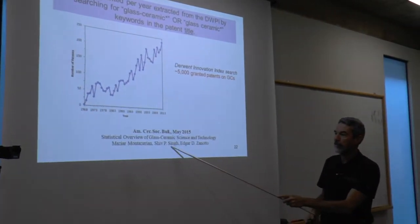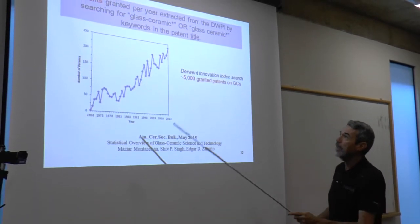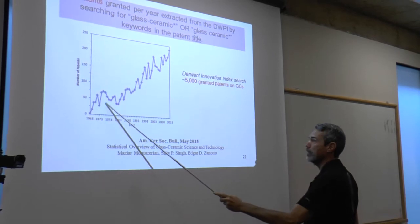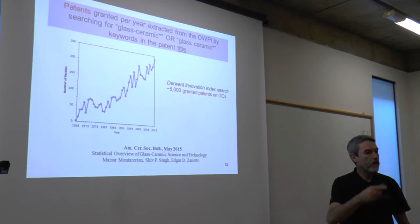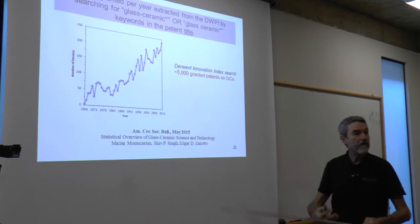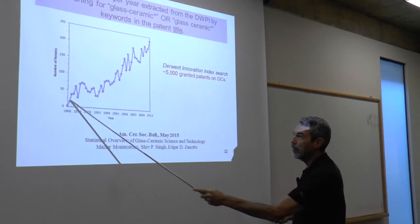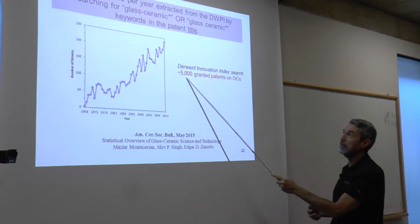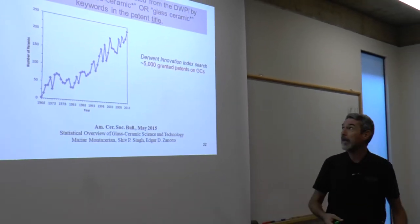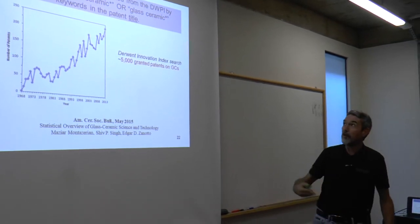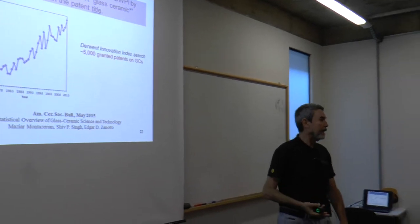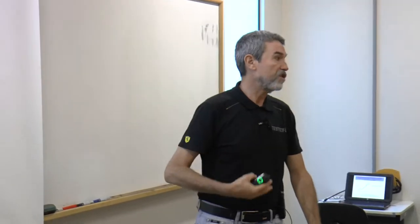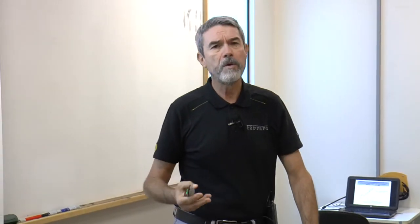From the same paper with Maziar and Sheev in the American Ceramic Society Bulletin, we also show that the number of patents is increasing. The number of scientific papers is growing, and since this is also an area of commercial interest, the number of patents is as well. About 5,000 patents have already been granted, and there are probably a few thousand more currently under analysis — it takes two or three years to analyze a patent. Our group here has about 20 patents in this field, more than half still being analyzed in different countries.